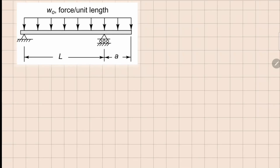This is problem 3.7, which is very similar to problem 3.3 we did earlier. In this case there are two supports, so there will be reactions R1 and R2. There is a uniformly distributed load. The distance to the first support is l and after this support the distance is a.